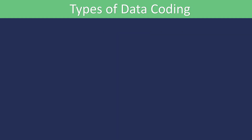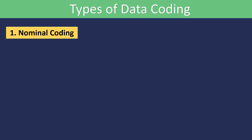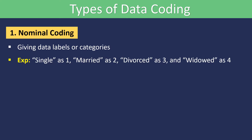Types of data coding. Coded data can be analyzed by statistical software and other tools. There are different types of data coding. Number one, nominal coding. This is like giving data labels or categories. For example, if we ask people about their marital status, we could code single as one, married as two, divorced as three, and widowed as four.